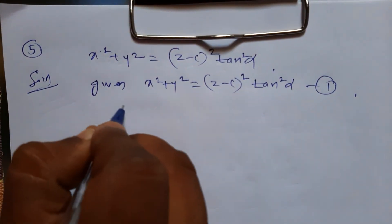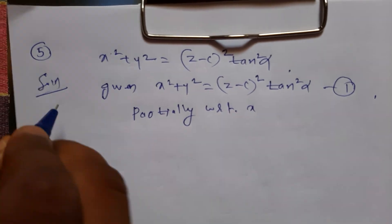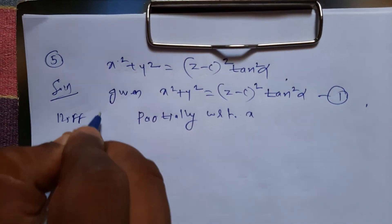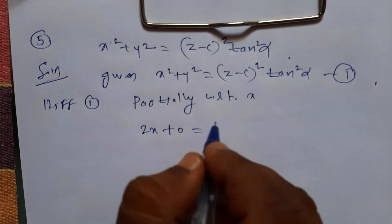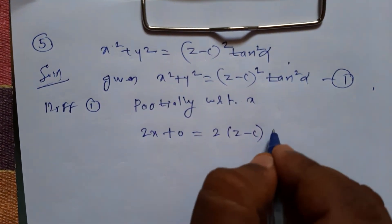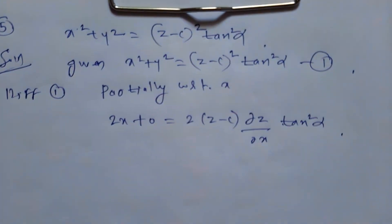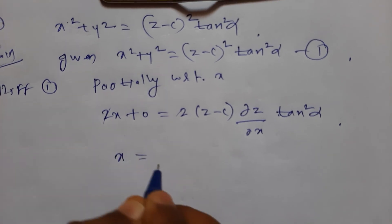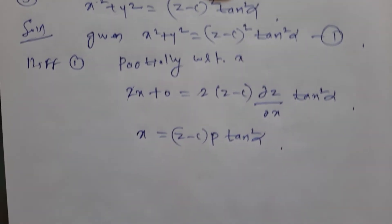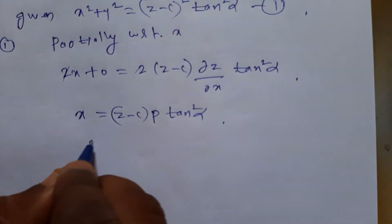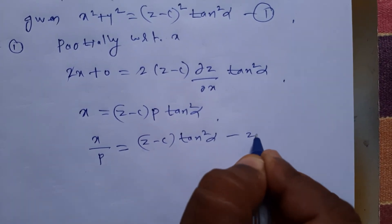Differentiating equation 1 partially with respect to x: derivative of x² is 2x, derivative of y² is 0. The RHS derivative is 2(z - c)·(dou z/dou x)·tan²α. Both sides, 2 cancels. So x = (z - c)·p·tan²α. Therefore x/p = (z - c)·tan²α. I denote this as equation number 2.